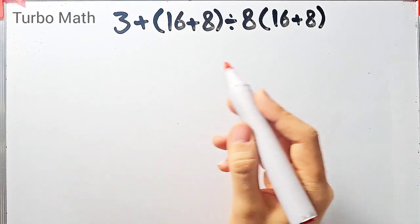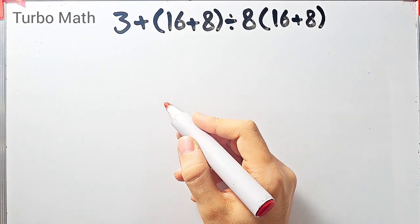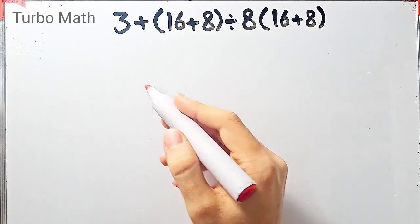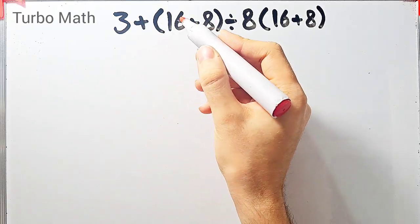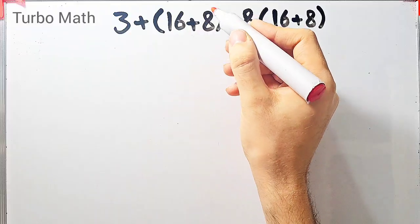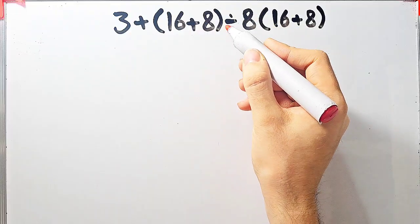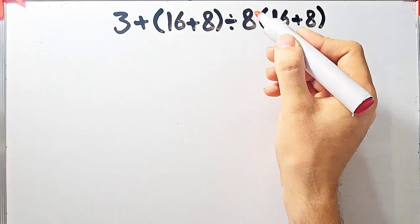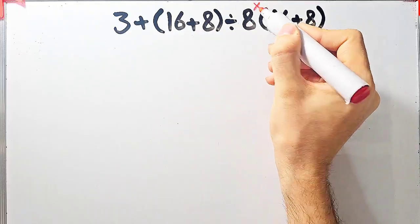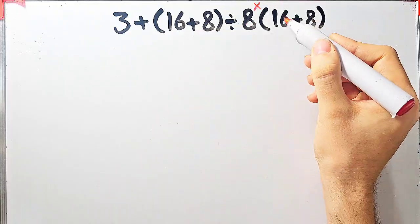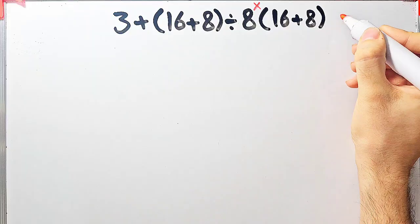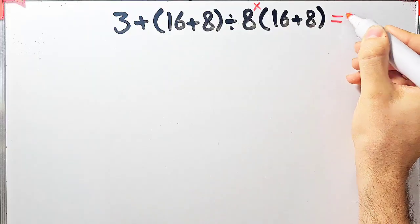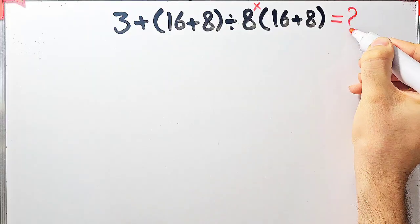In the first question, we have 3 plus open parentheses, 16 plus 8, closed parentheses, divided by 8, then times open parentheses, 16 plus 8, closed parentheses. What is the answer of this question?